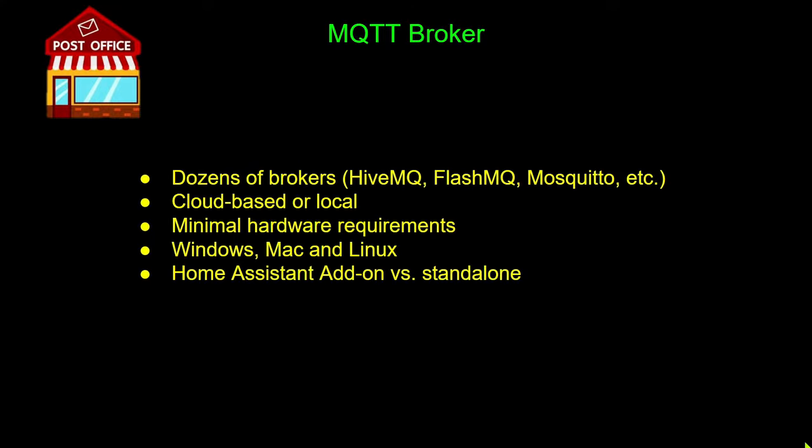An MQTT broker is required to use MQTT. There are lots of options — some open source and free, others paid. It doesn't take a lot of horsepower; you can easily run one on a Raspberry Pi. While there have been attempts to run a broker on an ESP32, if you have a lot of MQTT messaging going on, the ESP chip will probably struggle. There is also a Home Assistant add-on that within just a couple of clicks makes your Home Assistant instance an MQTT broker.